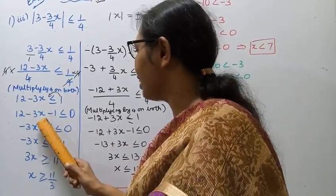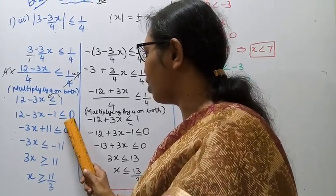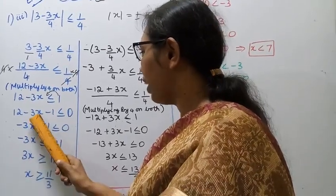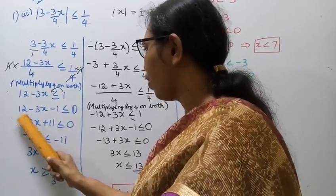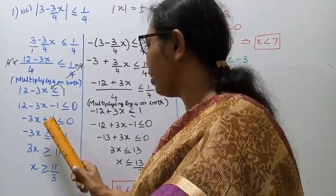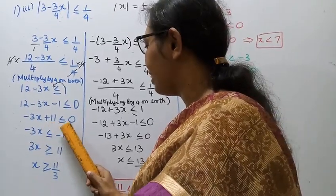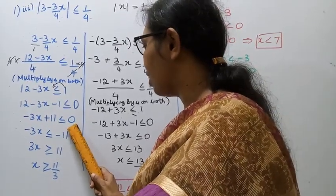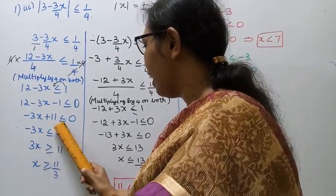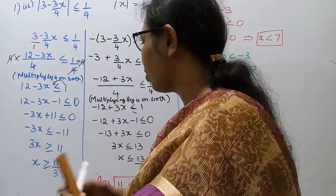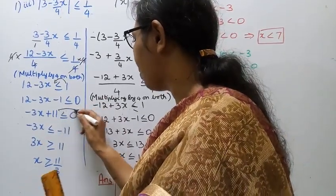After multiplying by 4: 12 minus 3x less than or equal to 1. Rearranging: 12 minus 1 gives 11, so minus 3x less than or equal to minus 11.